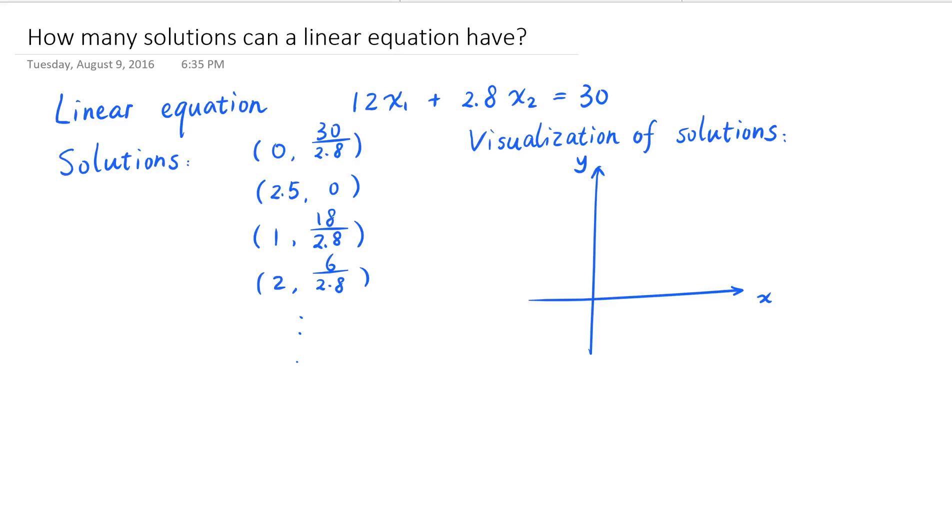Now there's a neat way to visualize these solutions in the x-y plane, because remember every ordered 2-tuple corresponds to a point in the x-y plane. For example, the first 2-tuple is here at 0 and 30 over 2.8, so it's this point. The second tuple is here, 2.5, 0, and we can plot the third and fourth 2-tuples on the x-y plane correspondingly. After plotting all of them in the x-y plane, we find an interesting phenomenon. All these points line up on a straight line.